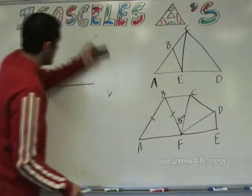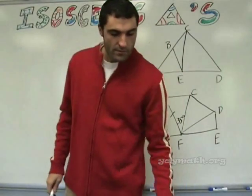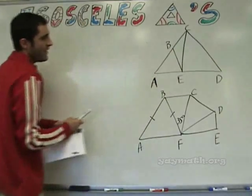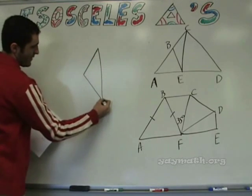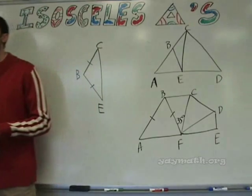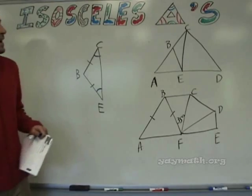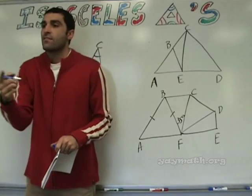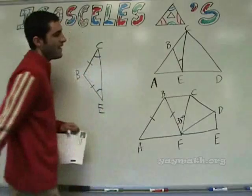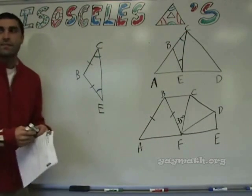Volunteer to read number two. If segment BE is congruent to segment BC, name two congruent angles. If BC is congruent to BE, I'm going to redraw that — triangle BCE. If BC is congruent to BE, name two congruent angles. Angle E and angle C. That works here. But over here we need to be more specific with three letters. Angle BEC and angle BCE. Good job. So BEC is congruent to BCE.